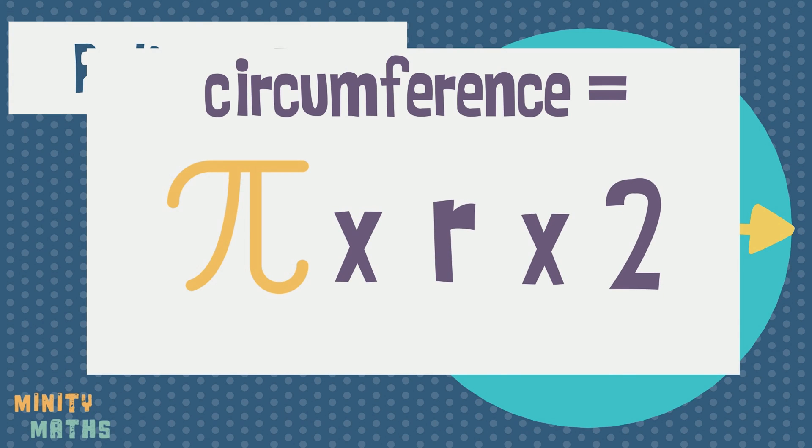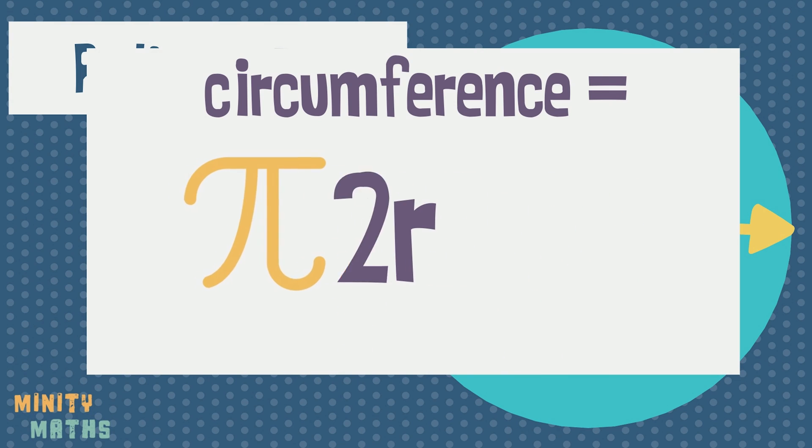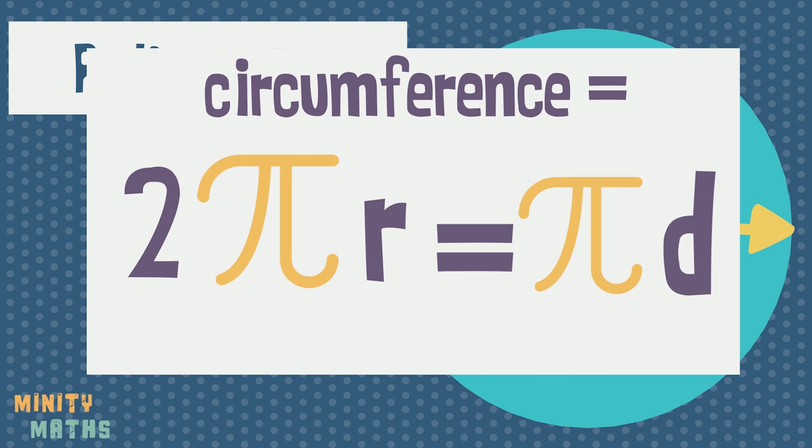You may have seen this alternative formula for calculating the circumference. This formula is equivalent to Pi times D.